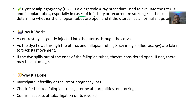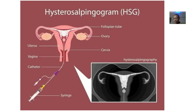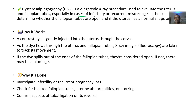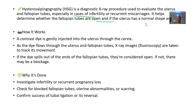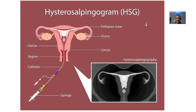It is especially useful when trying to assess the fertility of a woman, or if she is having repeated miscarriages and you want to find out the problem. It helps to determine whether the fallopian tubes are open and if the uterus has a normal shape and size. From this image, you can see that this area is a blocked fallopian tube — it helps to detect all those problems in those organs.